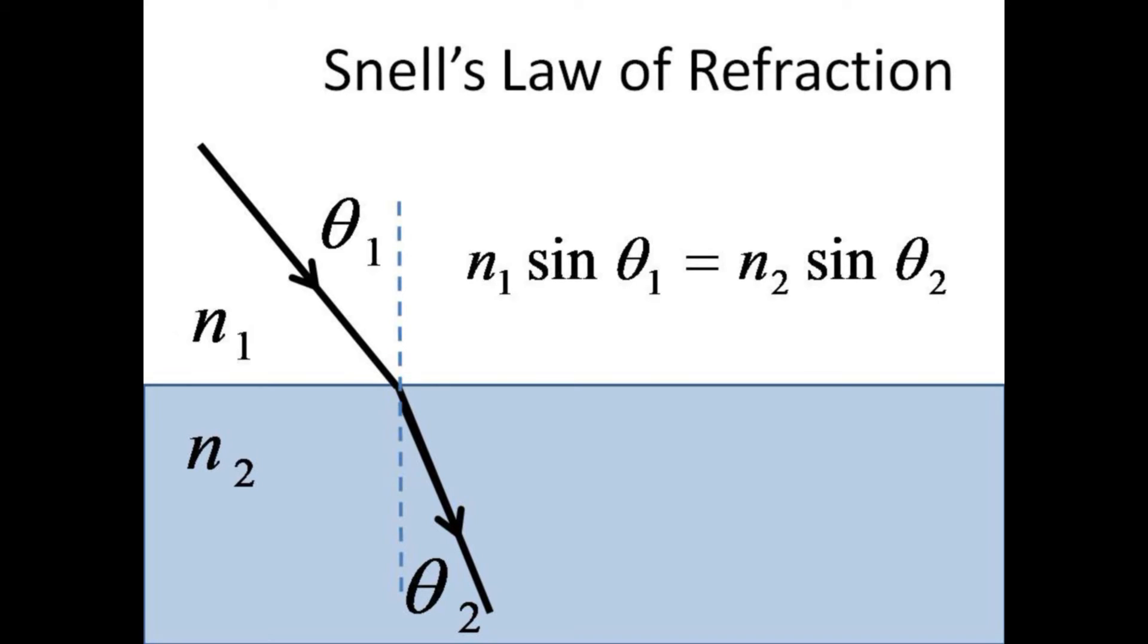A light ray passing from a medium with small index of refraction n1, that is, one where the speed of light is relatively high, into a medium with larger index of refraction n2, where the speed of light is relatively low, is bent toward the normal. Snell's law states that the product of n1 times the sine of theta1 is equal to the product of n2 times the sine of theta2. The angles are measured with respect to the normal to the surface of the interface.